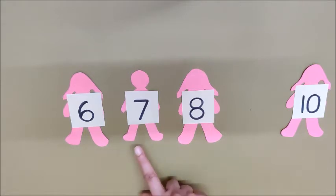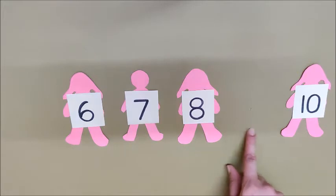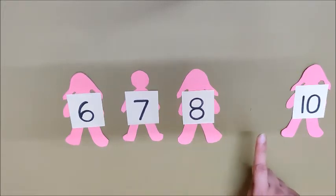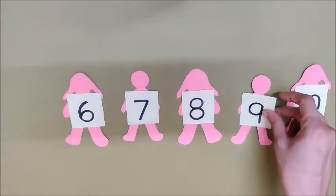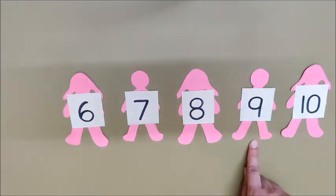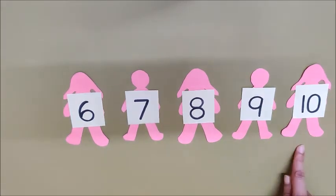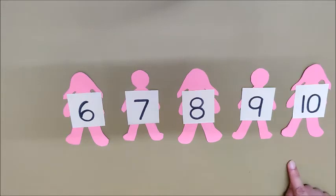Six, seven, eight. Ten. Again one number is missing here. What comes after eight? Nine. Very good. So nine was missing here. Six, seven, eight, nine, ten. Now these numbers are complete.